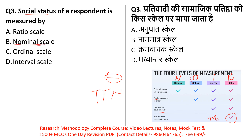Social status is measured by the Nominal scale. You cannot give a meaningful rank order — you cannot say higher class is definitively 'better' than middle class in a measurable way. You cannot use the ordinal scale to rank meaningfully. Interval scale arranges data in equal intervals — we cannot do that for social status categories. Ratio scale also cannot be applied here. Therefore, for social status, we use the Nominal scale. The right answer is Nominal scale.